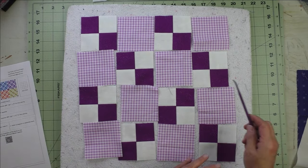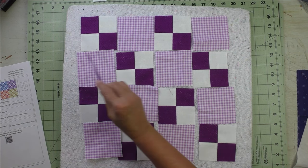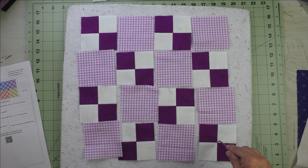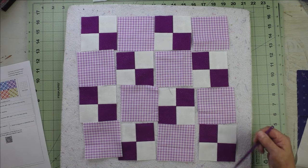Now you have four rows and four units in each row. Stitch the first row together, second, third, and fourth. Press your seams and then stitch your rows together.